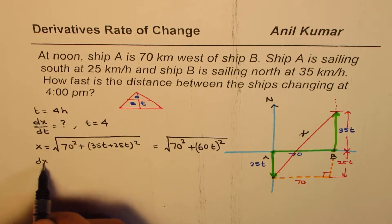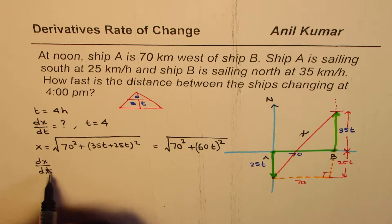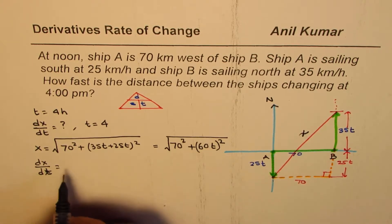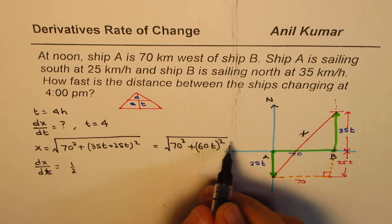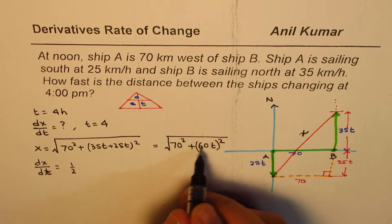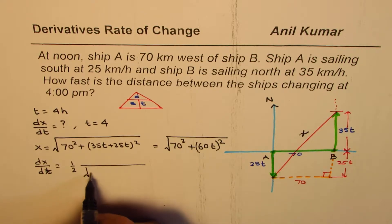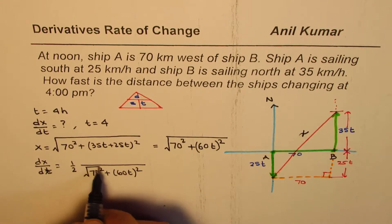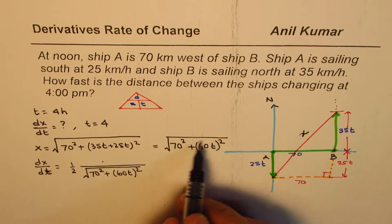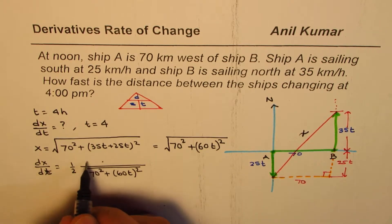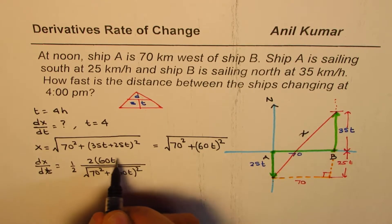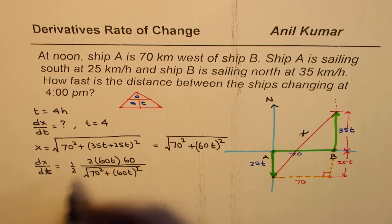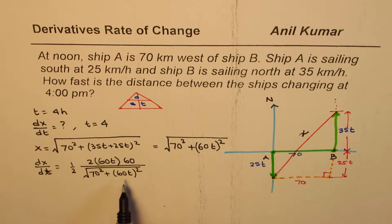What is dx/dt equals to? Now, dx/dt is the derivative of this with respect to time T. Square root function will be half, all this to the power of half minus 1, that gives us minus 1. So that comes in the denominator as square root of 70 square plus 60T whole square. And the numerator, derivative of this function is 2 times 60T times derivative of 60T, which is 60. So that is how you get the derivative of this function.